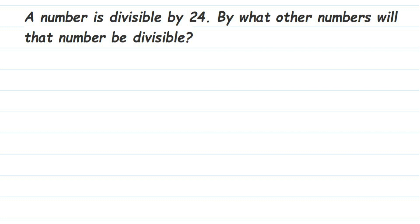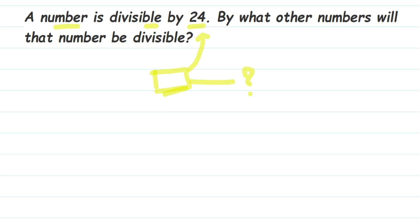Here's a question on factors: a number is divisible by 24 — by what other numbers will that number be divisible? They have given that there is a number which is divisible by 24, and we have to find out which other numbers this unknown number can also be divided by.